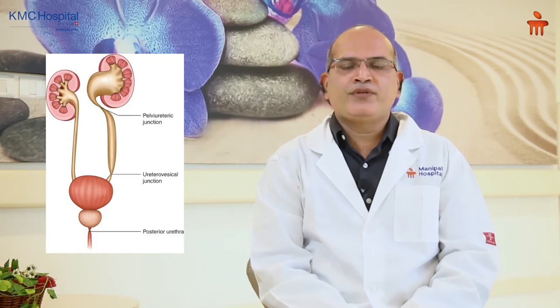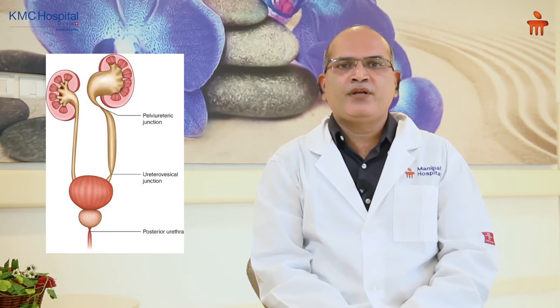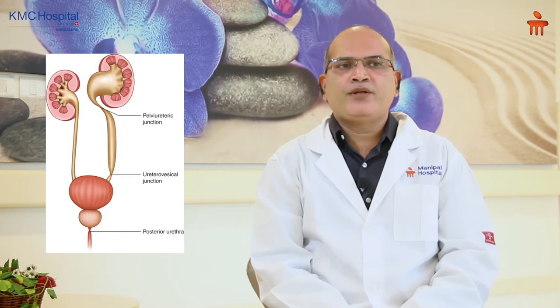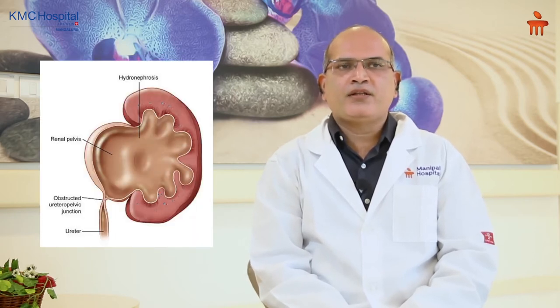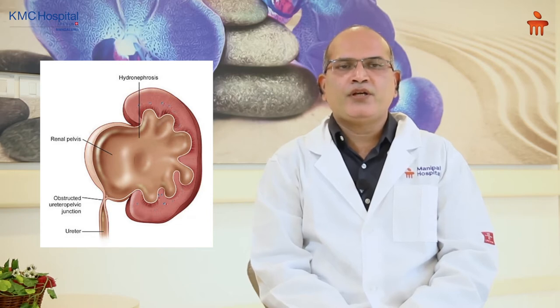I am Dr. Jayathirta Joshi, working as a consultant pediatric surgeon. PUJ obstruction: when you see the urinary system, urine is produced in the kidney and connected with the urinary bladder, where the urine is stored, by a pipe called the ureter. When there is obstruction at the level of the kidney in this pipe, it is called PUJ obstruction.